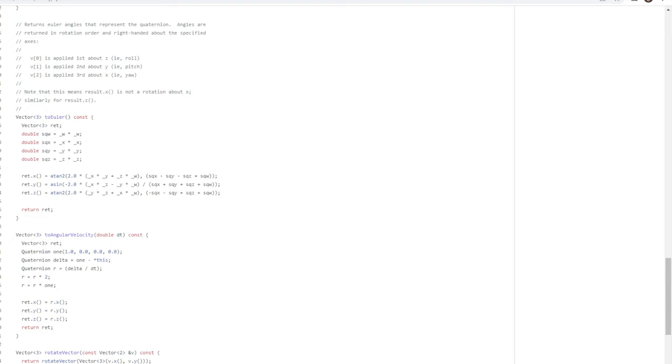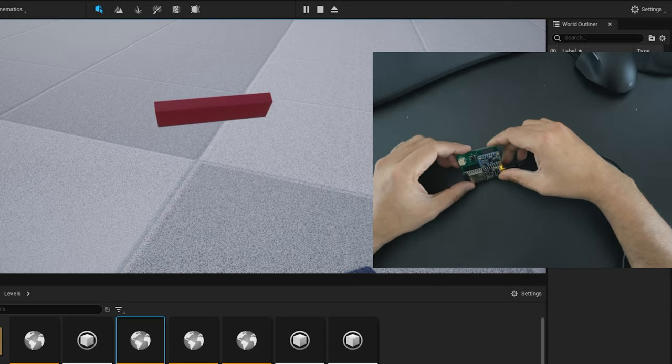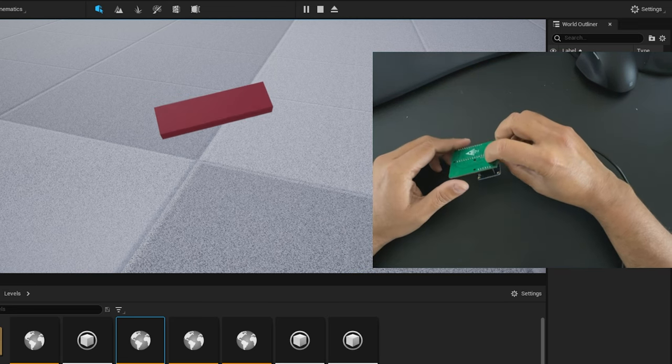Here is the formula to convert the quaternion to Euler. BNO libraries give simple functions to convert it to Euler. After conversion, now in Unreal, you can see the glitches are gone and it is working perfectly as expected.